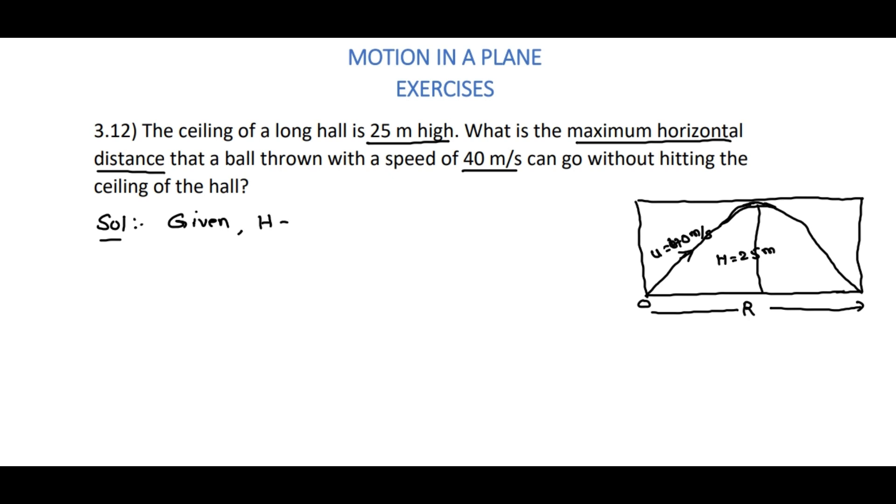H is equal to 25 meters. Initial velocity u is 40 meters per second. Now, height reached H is equal to u² sin²θ divided by 2g in the case of projectile. That is equal to, H is 25.